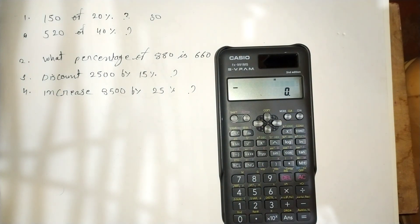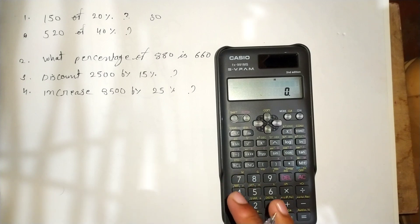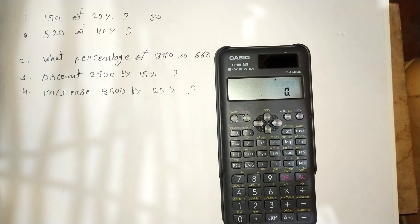First of all, one important thing — your calculator should be in Normal mode. The second question is similar: 520 of 40 percent.